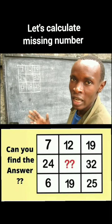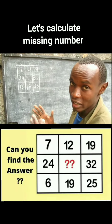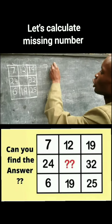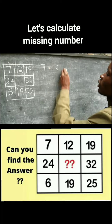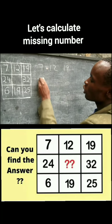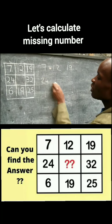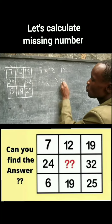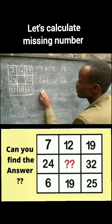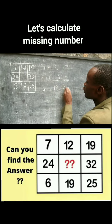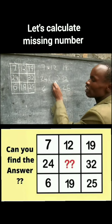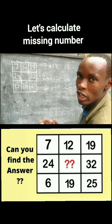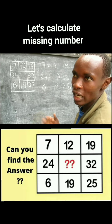Let's calculate the missing number. We have the sequence 7, 12, 19, 24 and another set: 32, 6, 19, 25. Let's calculate the missing number.